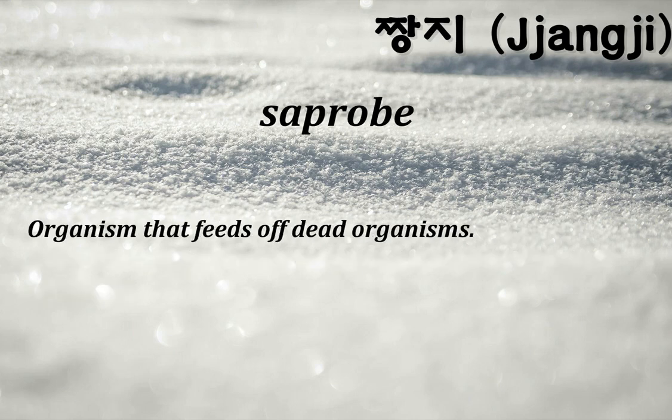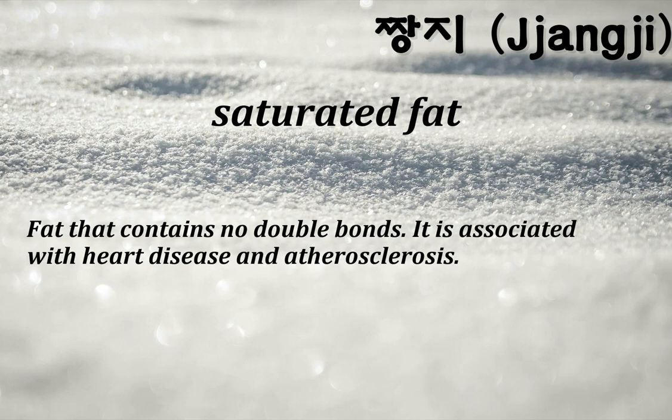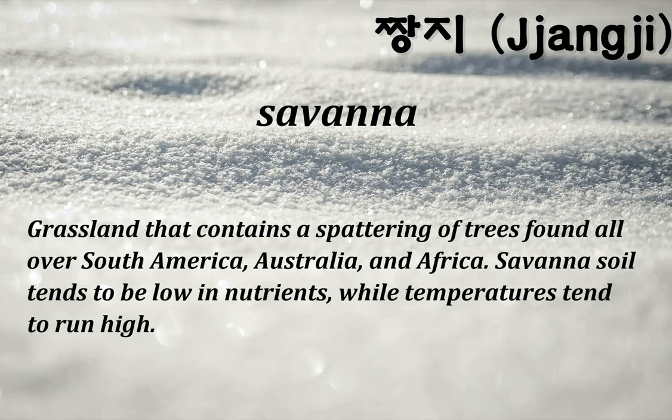Saprobe: organism that feeds off dead organisms. Saturated fat: fat that contains no double bonds; associated with heart disease and atherosclerosis. Savanna: grassland that contains a spattering of trees found all over South America, Australia, and Africa; savanna soil tends to be low in nutrients while temperatures tend to run high.